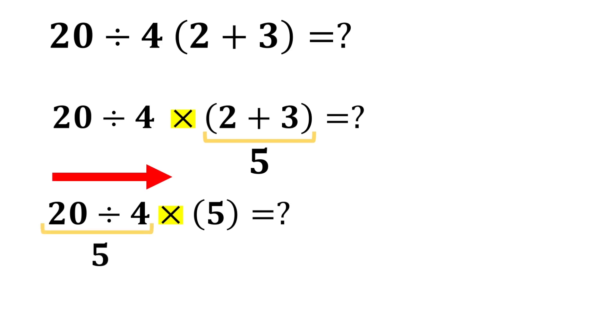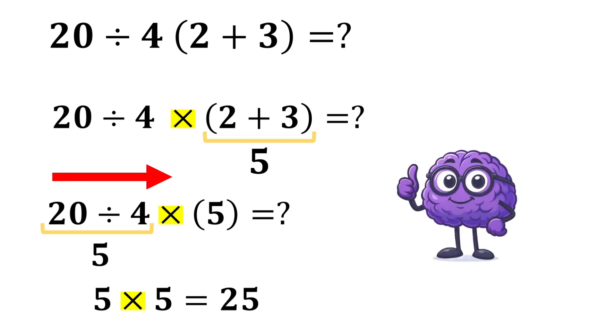20 divided by 4 equals 5, and finally, 5 multiplied by 5 equals 25. Our final answer is 25.